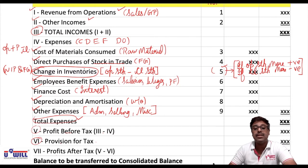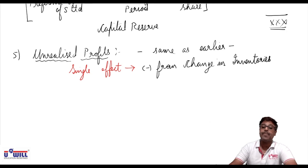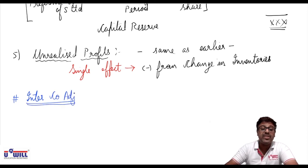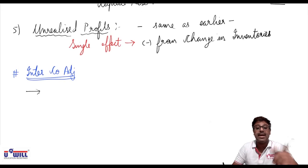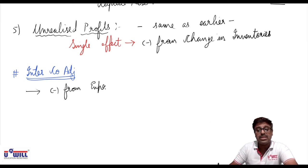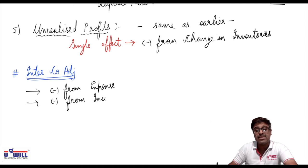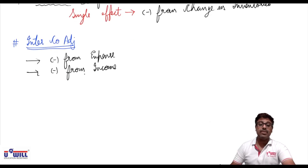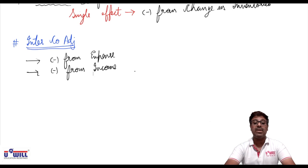The only adjustment possible in this chapter is the intercompany adjustment. Earlier in the balance sheet we used to subtract from asset and liability; here you subtract from the respective expense and from the respective income. When we solve questions you will understand this in detail.